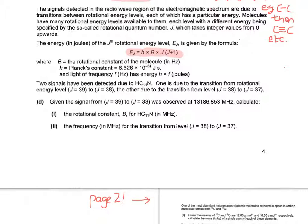So B is the rotational constant, h equals Planck's constant, 6.626 × 10^-34 joules per second. And light of frequency f in hertz has energy h times f in joules. So lots of information there, let's see what they actually want us to do.